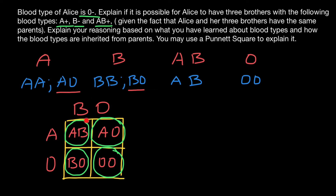Is it possible? Yes, it is possible. If one parent belongs to blood group A and is heterozygous, and another parent belongs to blood group B and is also heterozygous, then this couple may have four different blood groups among their children.